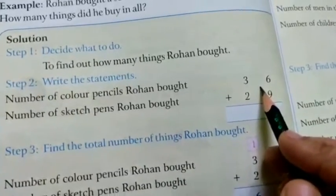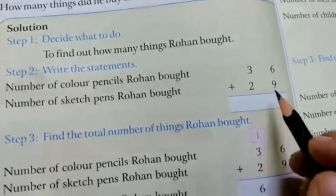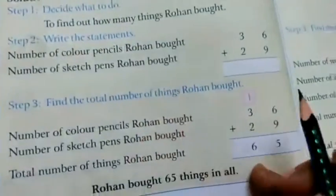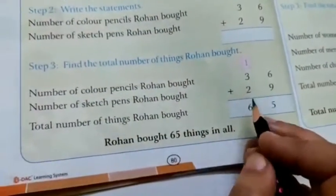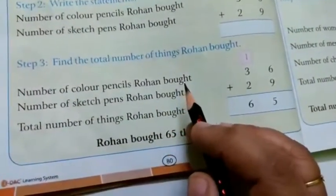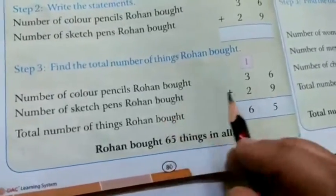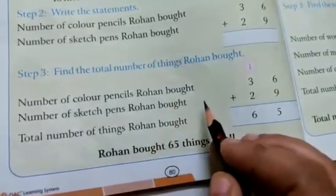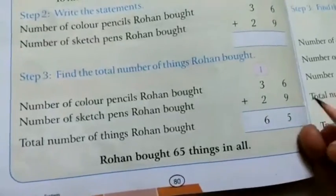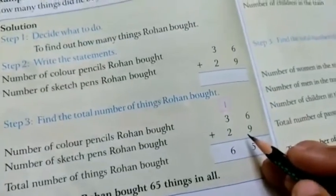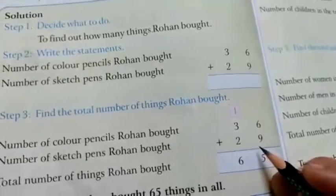So color pencils 36 and sketch pens 29. Now you have to find out the total. Number of color pencils Rohan bought 36, number of sketch pens Rohan bought 29. Then when you are going to add, in all means what? You have to add here.